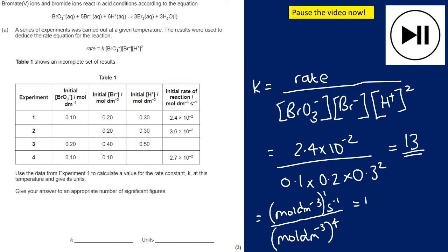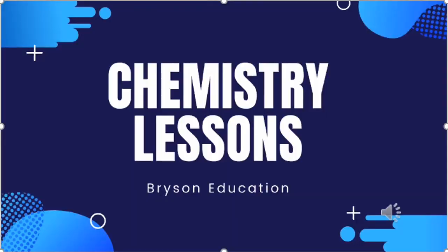We've got mole dm minus three to the power of minus three, seconds to the minus one. I need to multiply this bracket out. One times minus three is minus three. Minus three times minus three is plus nine. So our units are mole minus three dm9 s minus one. That's the end of this video. Hopefully it was useful. If it was, please make sure you subscribe and like.